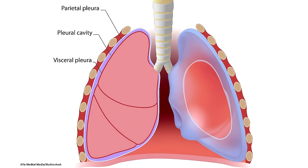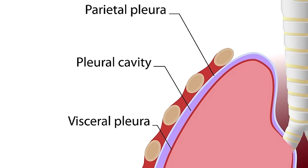When talking about a specific serous membrane, they'll put that directional term in front of it. For example, the part of the pleura that actually touches the lung is called the visceral pleura, and the lining that touches the wall of the thoracic cavity is called the parietal pleura.